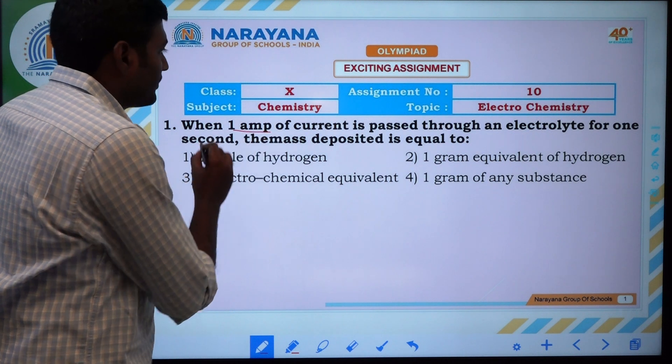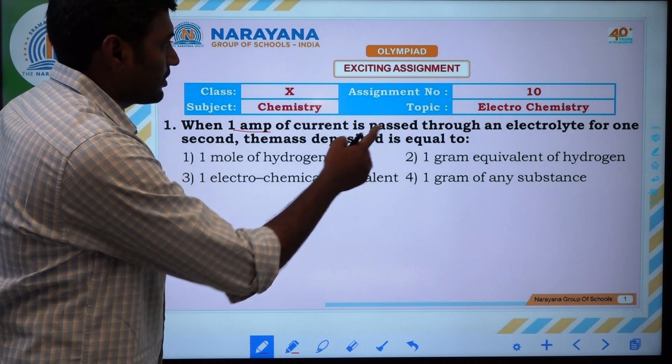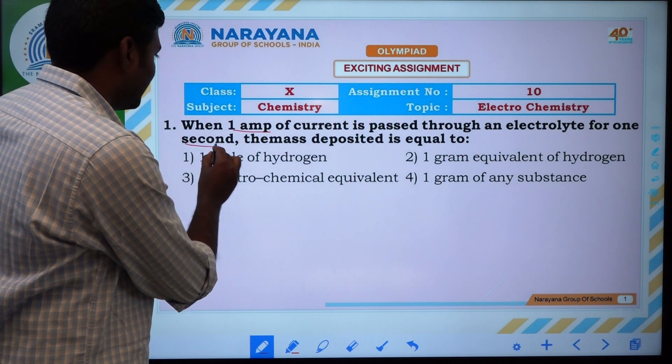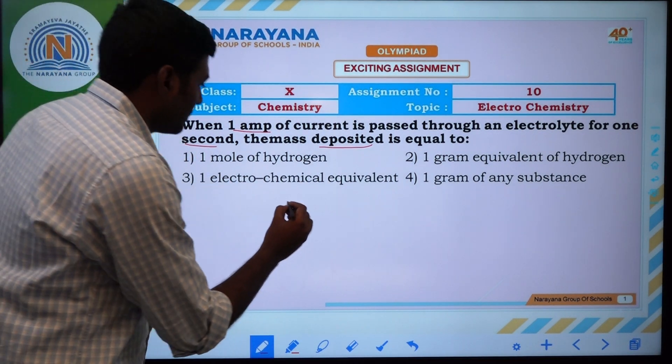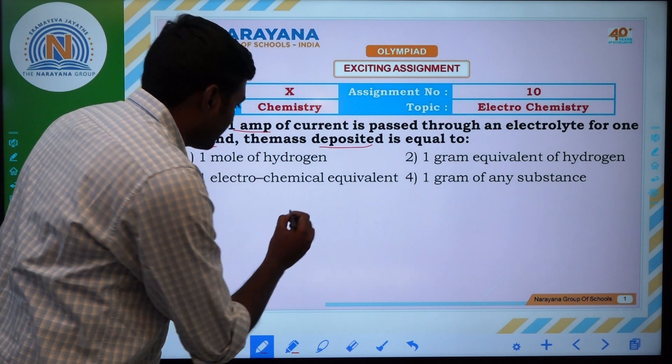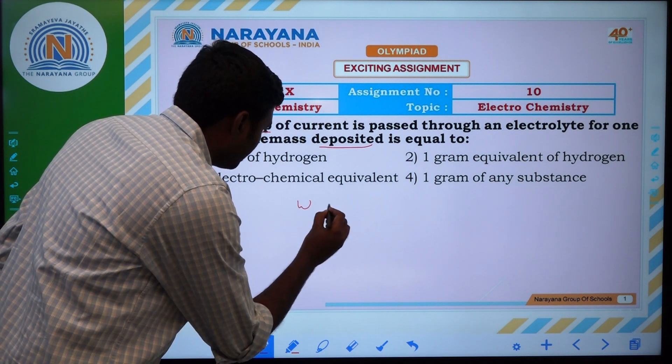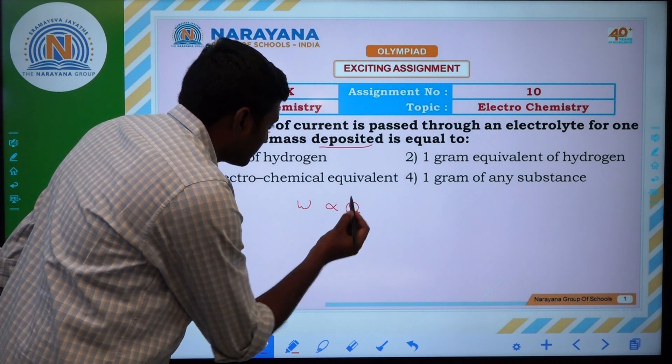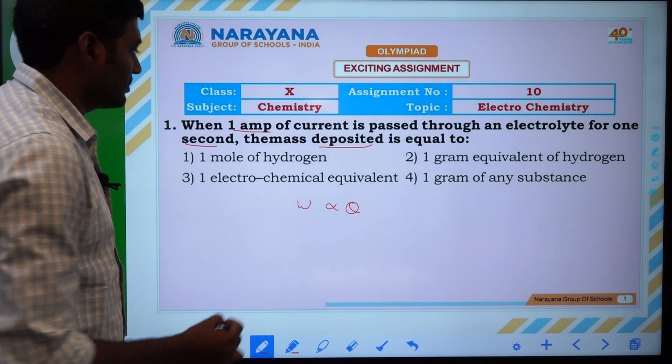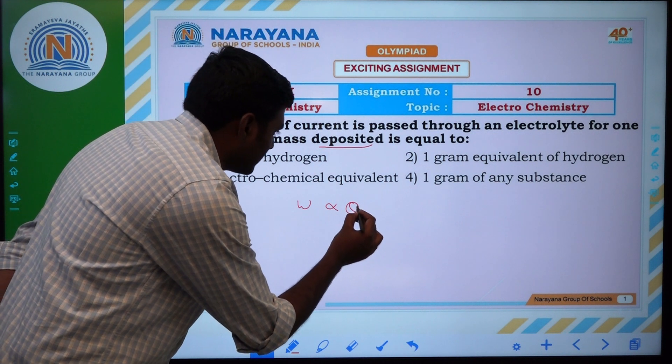When one ampere of current is passed through an electrolyte for one second, the mass deposited is equal to... From this question, based on first law of Faraday, W amount of substance is directly proportional to charge passed through the electrolyte, that Q charge here.